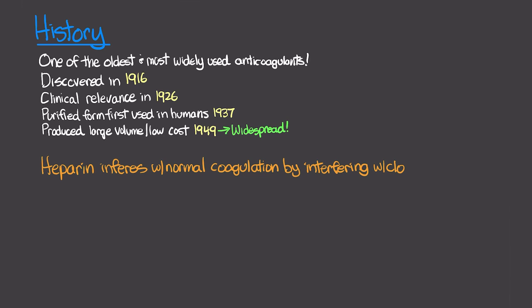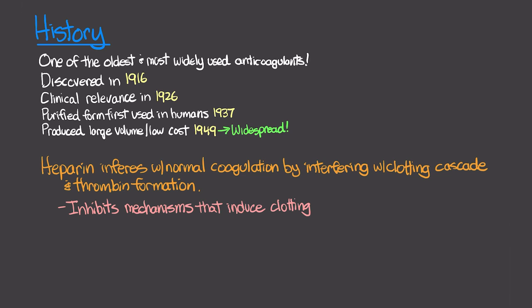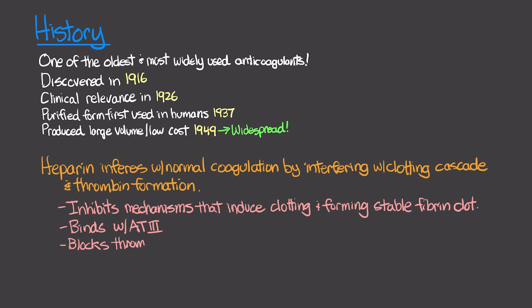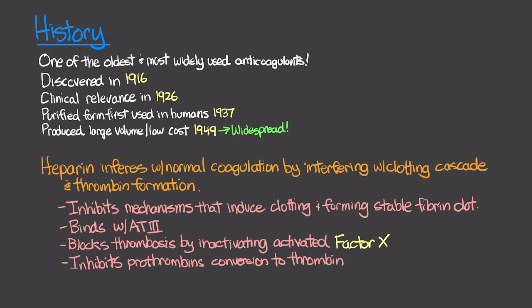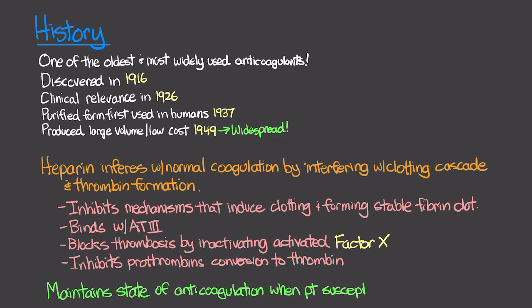A lesson on the clotting cascade is coming soon, so stay tuned for that. Heparin inhibits the mechanisms that induce the clotting of blood and the formation of a stable fibrin clot. It combines with antithrombin 3 (AT3), then blocks thrombosis by inactivating activated factor Xa, and ultimately inhibits prothrombin conversion to thrombin. Essentially, we use this to maintain a state of anticoagulation in situations where a patient is susceptible to potentially dangerous clot formations.